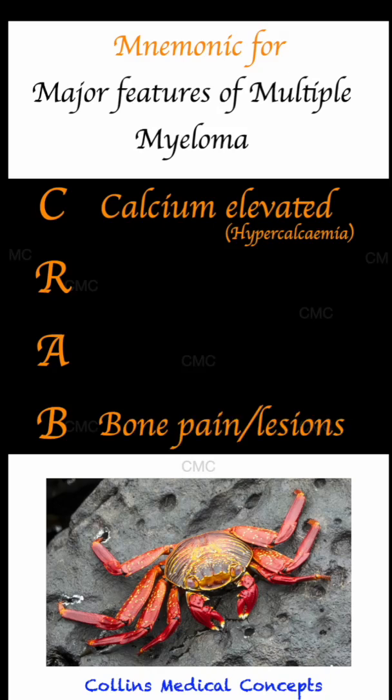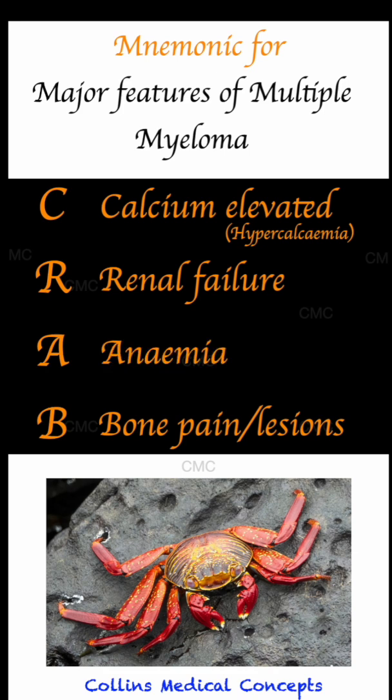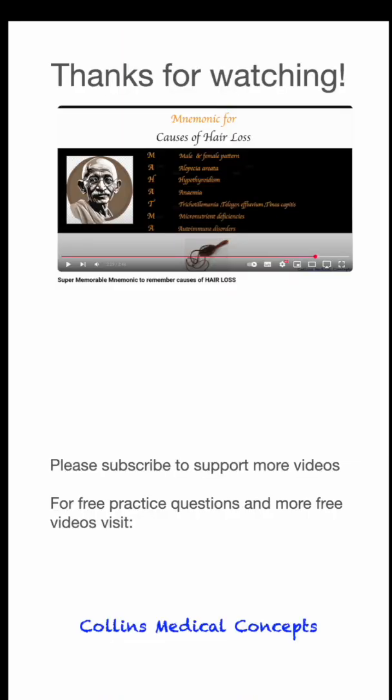R for renal failure, which is primarily caused by the toxic effects of the monoclonal light chains on the kidneys. And finally, A for anemia, which occurs because of the overcrowding of healthy bone marrow by myeloma cells.